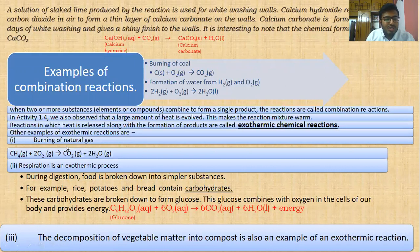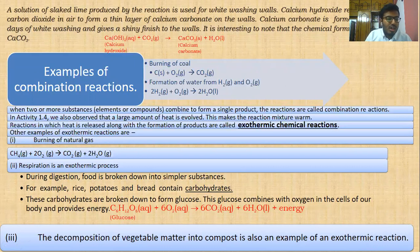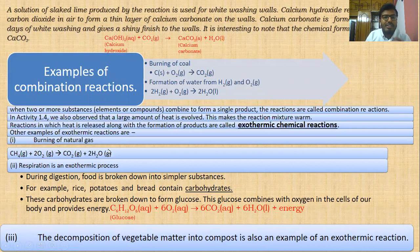The first example is burning of natural gas. Natural gas is CH4, which means methane. When methane combines with oxygen, we get carbon dioxide and H2O — carbon dioxide and water are the products. That is also an exothermic reaction.